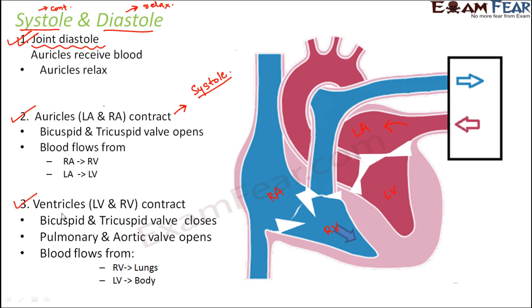After that, it is the turn for the ventricles to contract — this is ventricular systole. In ventricular systole, the bicuspid and the tricuspid valves will close. These valves close so that the ventricle can contract. If these valves remained open there might be backflow of blood, which we do not want — therefore these valves get closed.